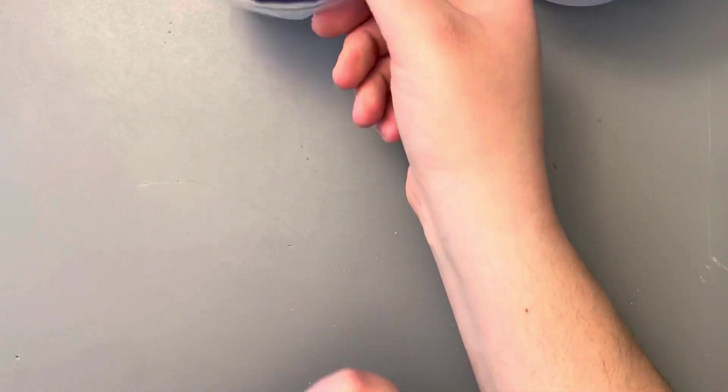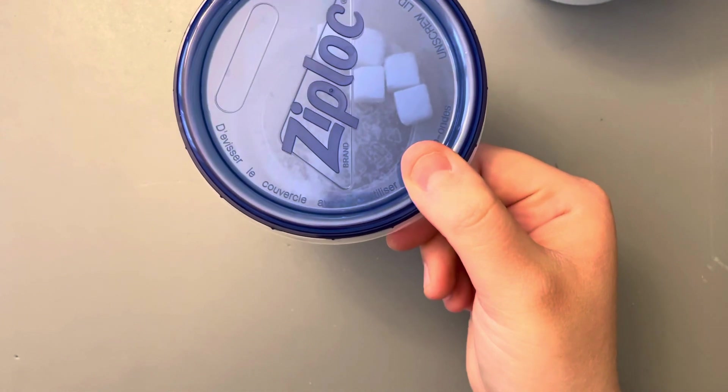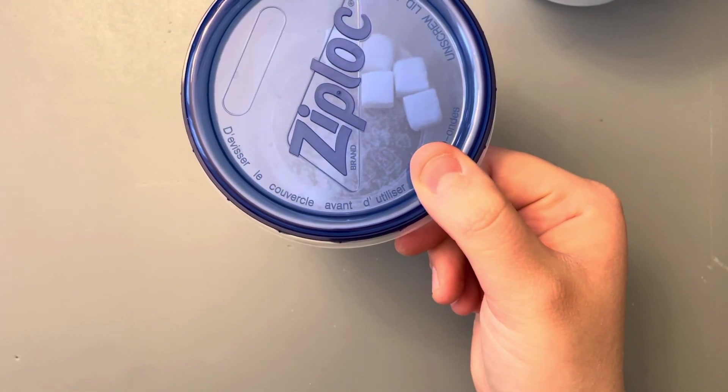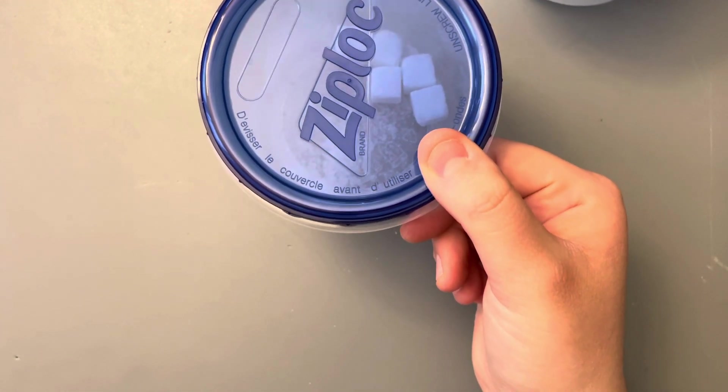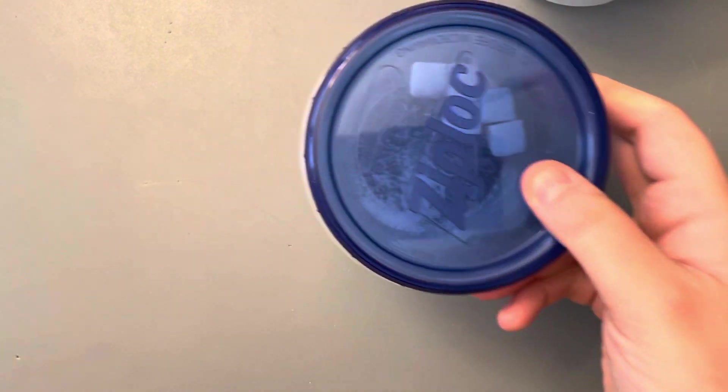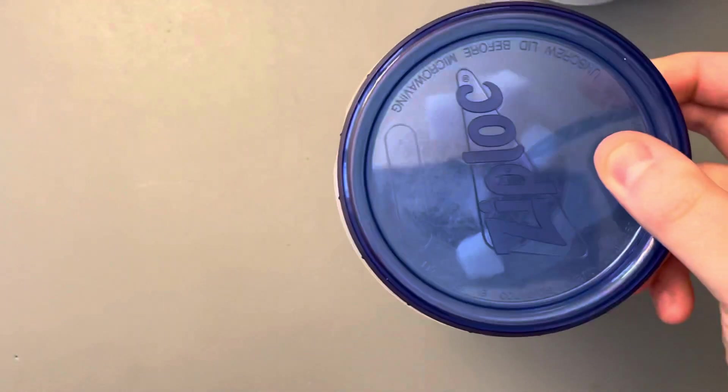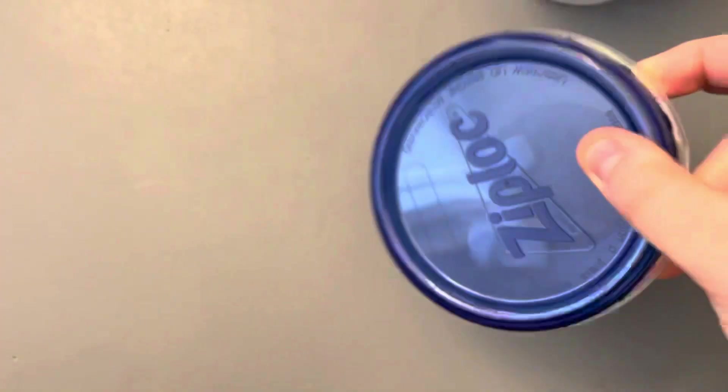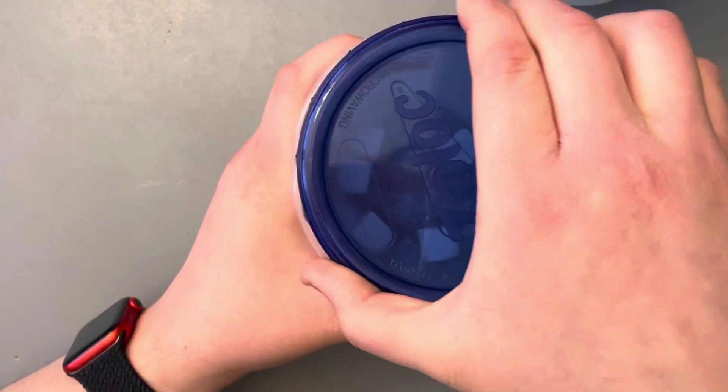So back over to our sugar cubes. So we already shaked it 25 times. So now it's after 50 shakes. So that's another 25 shakes. So here we go with another 25. Counting: 1, 2, 3, 4, 5, 6, 7, 8, 9, 10, 11, 12, 13, 14, 15, 16, 17, 18, 19, 20, and 1, 2, 3, 4, 5. All right. Let's see.